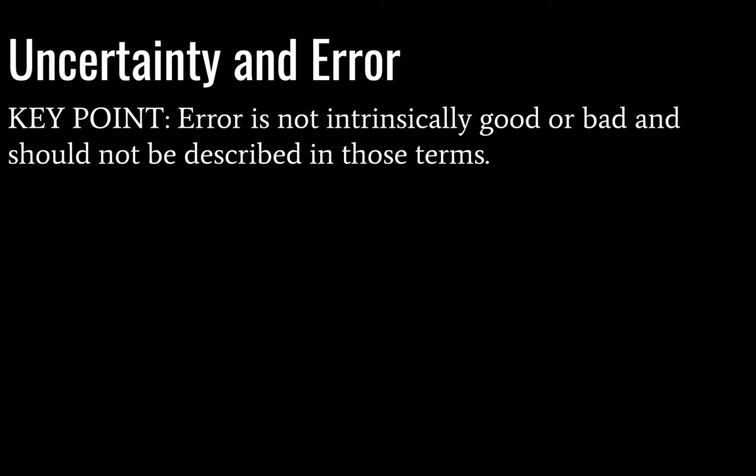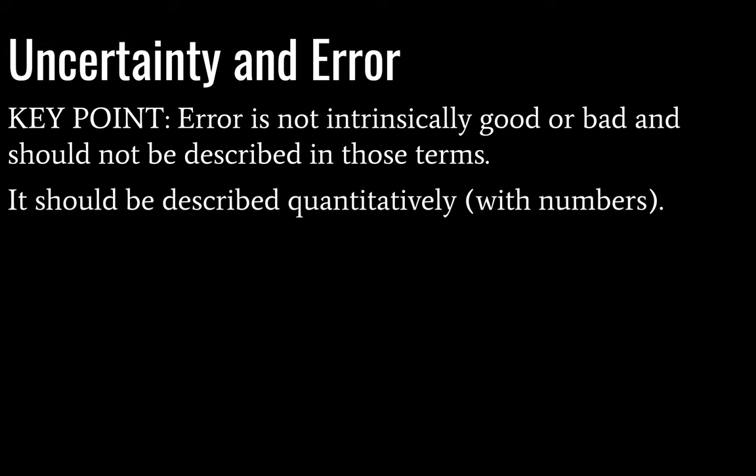One thing I see a lot is students trying to put adjectives on error — like 'I have a small amount of error' or 'a large amount of error.' Well, it's all relative. A small amount of error for your experiment might be an enormous amount of error for another experiment. For example, the particle collider at CERN has very, very small error. So we don't describe it as good or bad — just describe it quantitatively. Just give a number. By the end of this lesson, you'll be able to do that.